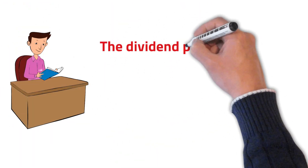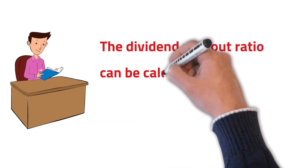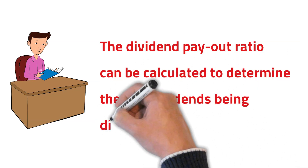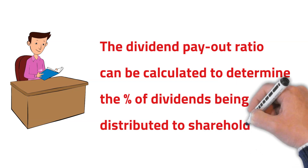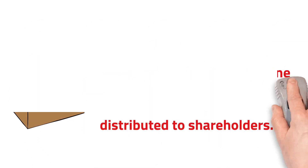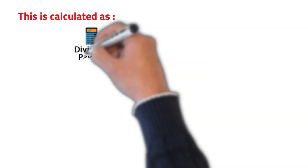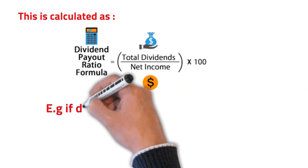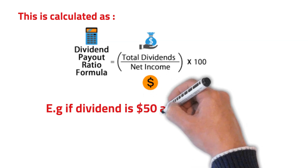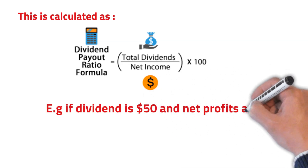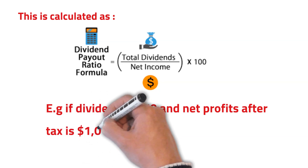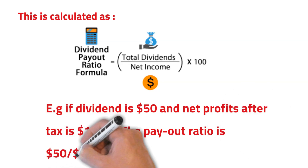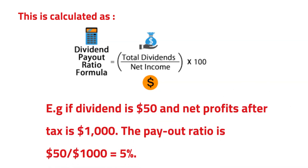The dividend payout ratio can be calculated to determine the percentage of dividends being distributed to shareholders. The dividend payout ratio is equal to total dividends divided by net income or net profit after tax. For example, if dividends are $50 and net profits after tax is $1,000, the payout ratio is $50 over $1,000, therefore 5%.